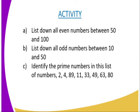We are going to have the following activities. Number 1: list down all even numbers between 50 and 100. Number 2: list down all odd numbers between 10 and 15. Number 3: identify the prime numbers in this list — 2, 4, 8, 9, 11, 33, 49, 63, and 8.